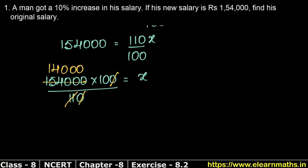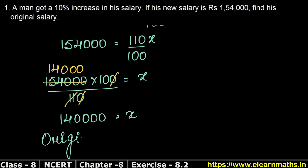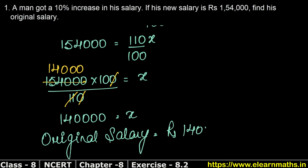So x equals 1,40,000. Since x represents the original salary, the original salary is rupees 1,40,000. That is the answer.